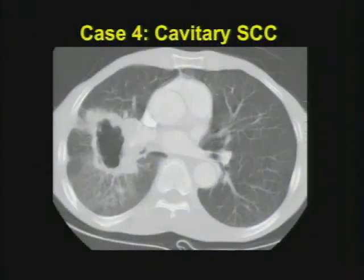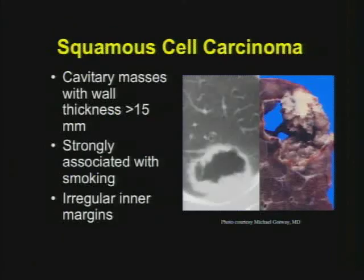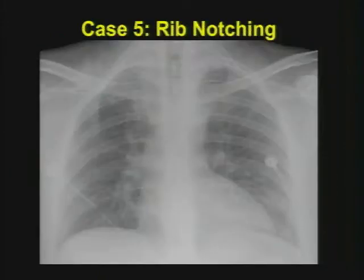Case number four: simply showing another cavitary squamous cell carcinoma. They don't always have to be juxtahilar or near the mediastinum, but they very often are. They have very thick, irregular walls — particularly with fungating margins. You should really be thinking squamous cell carcinoma over lung abscess. Greater than 15 millimeters in wall thickness, association with smoking — you know the drill.